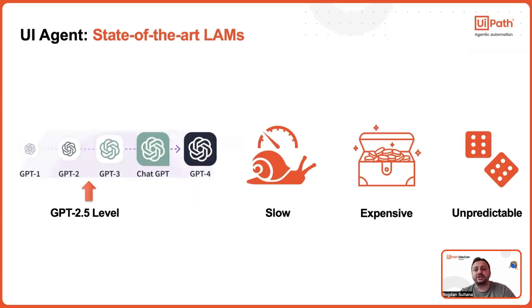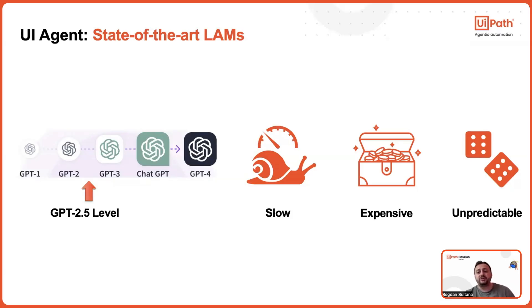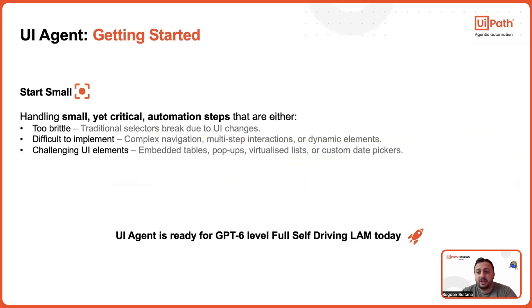Large action models are one of the most exciting developments in AI automation, no doubt about that. But they're still in their earliest stages — most are at about GPT-2.5 level when it comes to automating complex end-to-end enterprise scenarios. They tend to be slow, expensive, and unpredictable, especially when scaled.